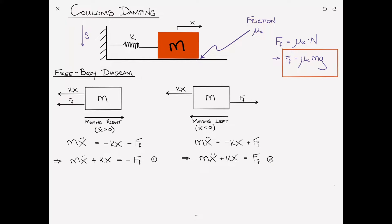In some texts, you might see these equations combined using something called the signum function. The signum function returns whatever the sign of the parameter is. We can write the equation of motion as MX double dot plus the signum of X dot times F sub F plus KX equals zero. By writing it that way, it draws attention to the fact that this term is a quasi-damping term.